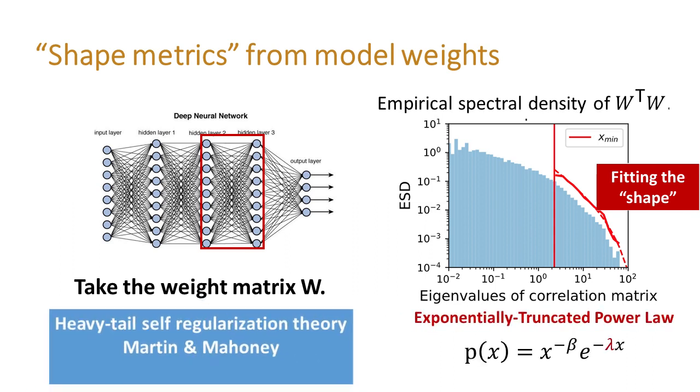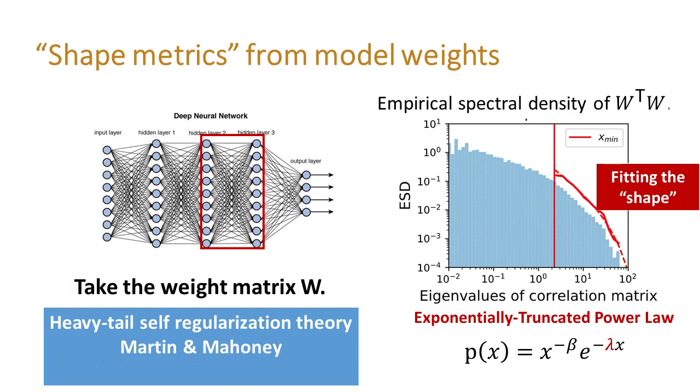From the heavy-tail self-regularization theory, the shape of the spectral density can be used to predict model quality. We call metrics obtained from this method the shape metrics, and we can measure them using the Weight Watcher software.